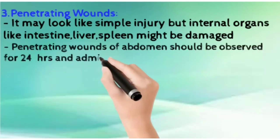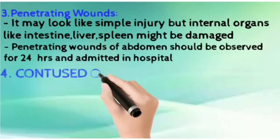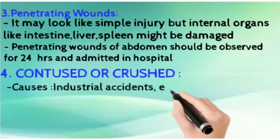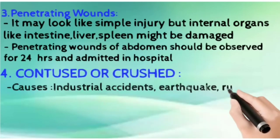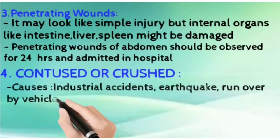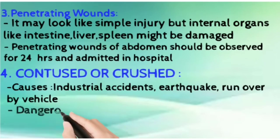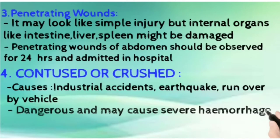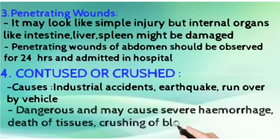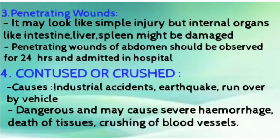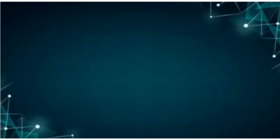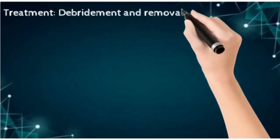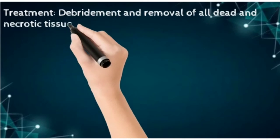Contused or crushed wounds are dangerous because they may cause severe hemorrhage, death of tissues, and crushing of blood vessels. The treatment for this type of wound is debridement and removal of all the dead and necrotic tissues.